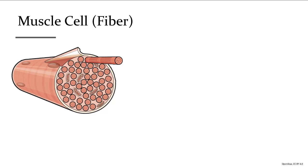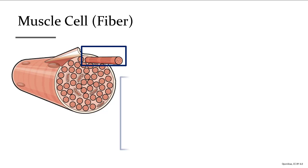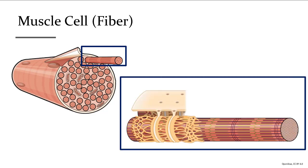Inside a muscle cell or fiber, it is tightly filled with long columns known as myofibrils. Seen as many cut circles indicating the ends of these numerous columns, these are what contract by pulling the ends of the muscle together. The muscle ends are attached to bone on either side, so contraction can cause a joint to move.